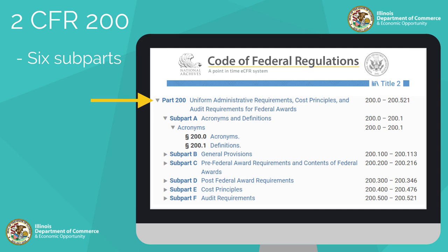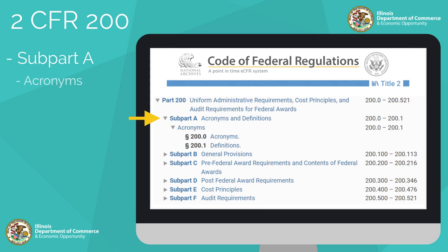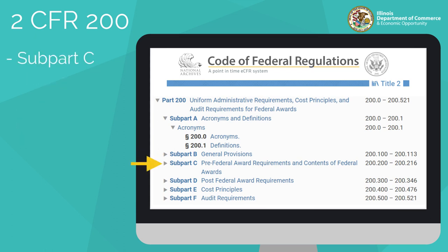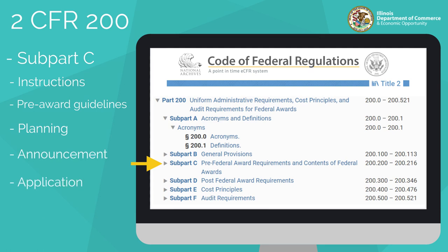2CFR 200 is broken down into six subparts. Subpart A lists the acronyms and definitions you will come across while reviewing this chapter, making it a useful reference tool. Subpart B defines the purpose of 2CFR 200, establishing uniform administrative requirements and providing a basis for the orderly and consistent collection and uniform submission of data. Subpart C provides instructions and pre-award guidelines to be used by awarding agencies in the program planning, announcement, application, and award processes.